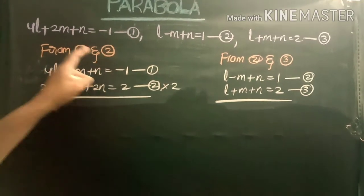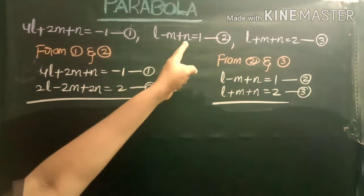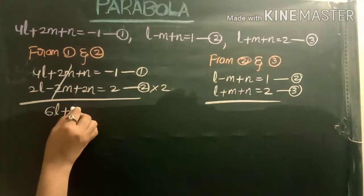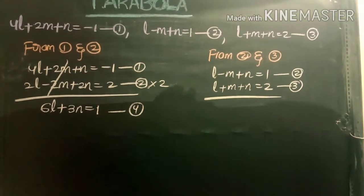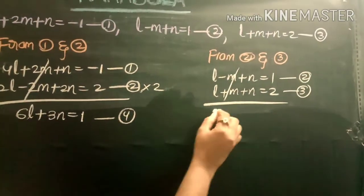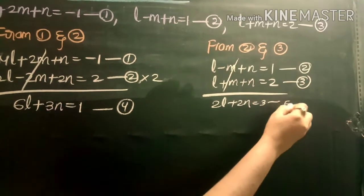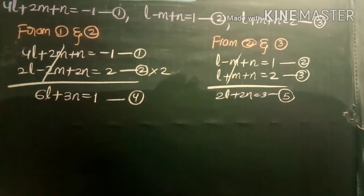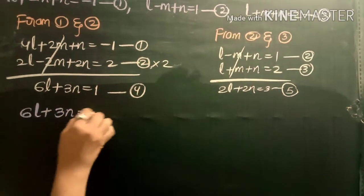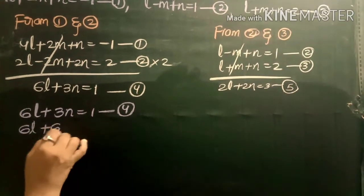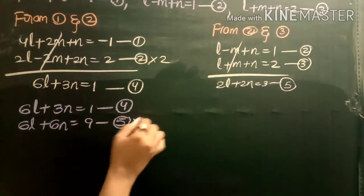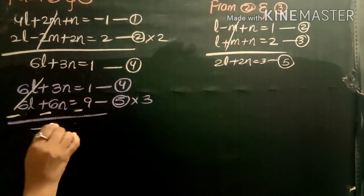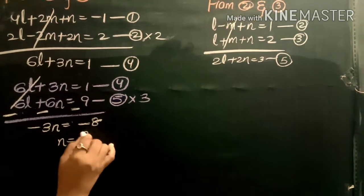From equations (1) and (2): subtracting after manipulation gives 6l + 3m = 1 — equation (4). From equations (2) and (3): adding gives 2l + 2n = 3 — equation (5). Solving equations (4) and (5) together, by multiplying equation (5) by 3 and eliminating terms, we find 3n − 6n = −3n = −8, so n = 8/3.